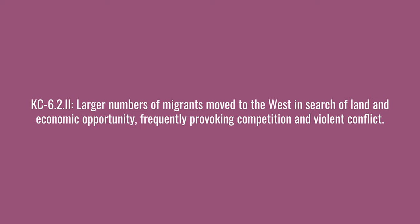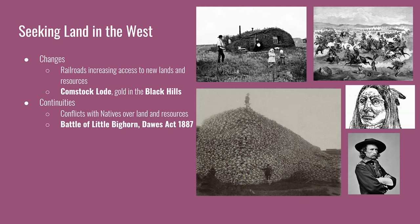The last key concept on migration: larger numbers of migrants moved to the West in search of land and economic opportunity, frequently provoking competition and violent conflict. American expansion into the West causes conflict with Native Americans, very similar to previous periods when Americans migrated West and displaced natives. The biggest change is that railroads are making it much easier for Americans to get out West, so settlers migrate in greater numbers. U.S. Army troops are also sent in larger numbers to protect settlers at the expense of Native Americans. New deposits of precious metals are found — the Comstock Lode was the largest silver deposit found in the U.S., and gold is found in the Black Hills. As miners made their way in, they further displaced Native Americans.